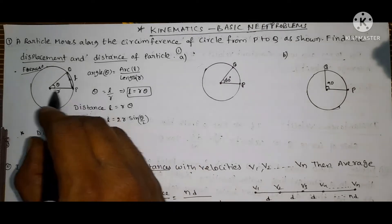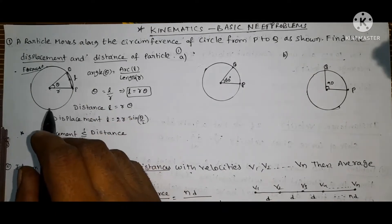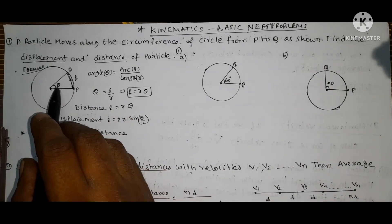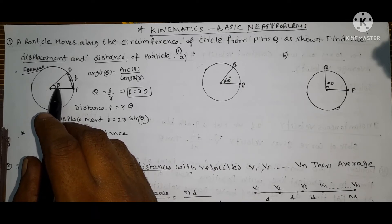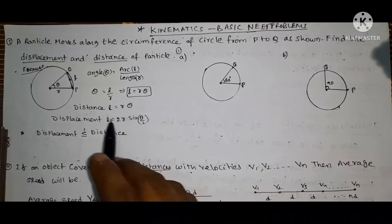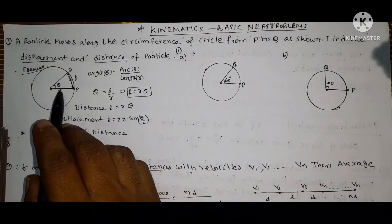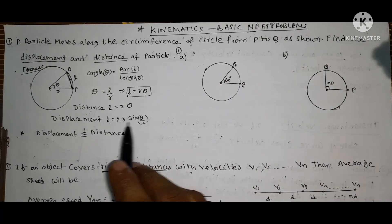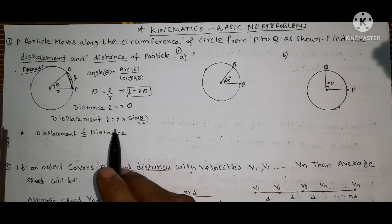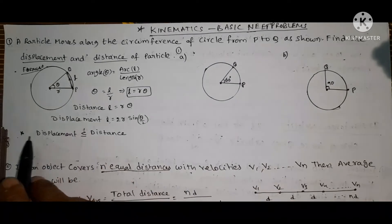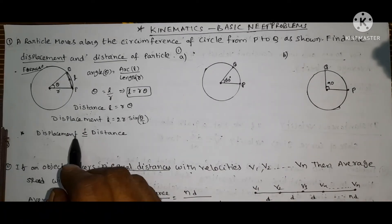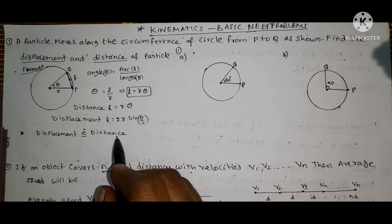You have to remember this formula: displacement L equals 2R sin(theta/2). Alternatively, you can use the triangle method — hypotenuse squared equals side squared plus side squared. If theta is given as a specific value like 30, 60, or 90 degrees, use the formula L equals 2R sin(theta/2). Remember: displacement is always less than or equal to distance. If a particle moves in a straight line, distance and displacement are equal.